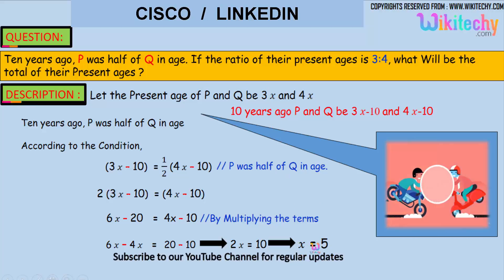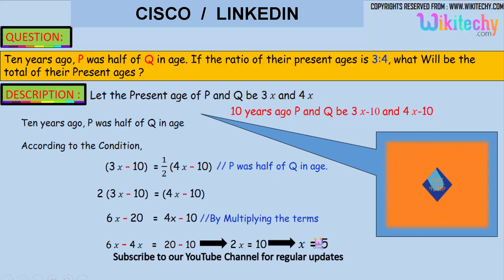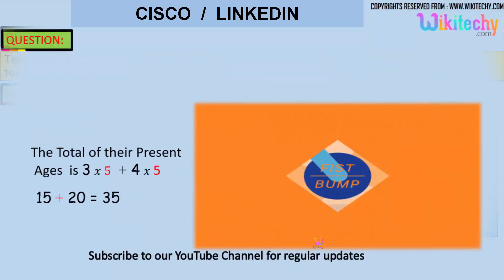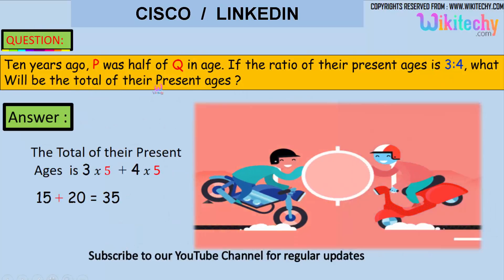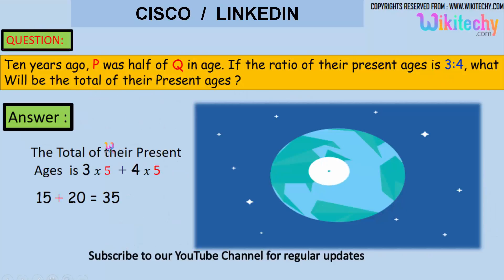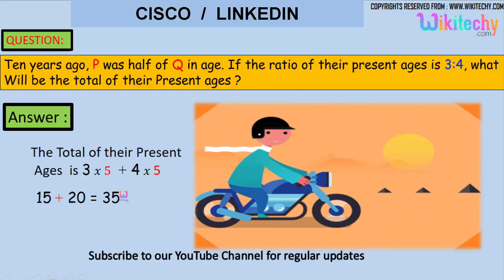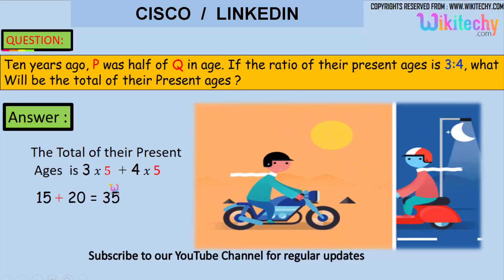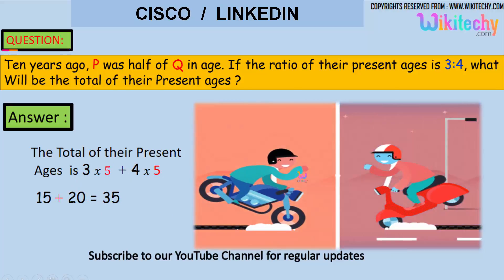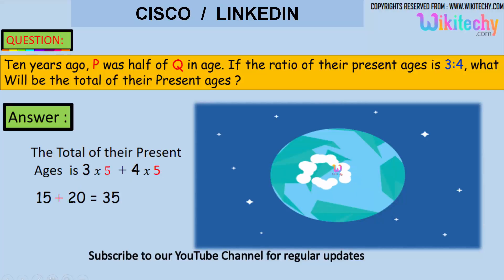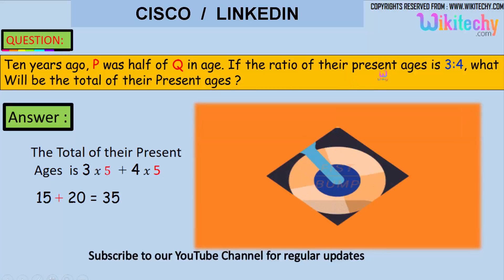So 3 into 5 is 15, and 4 into 5 is 20. The question asks for the total of their present ages. So 3 into 5 plus 4 into 5 gives us 15 plus 20, which is equal to 35. That is the total present age of both of them.